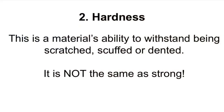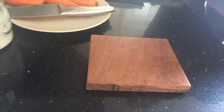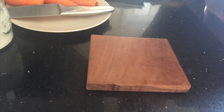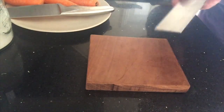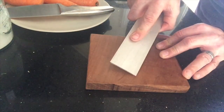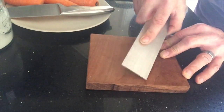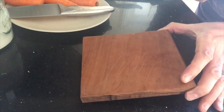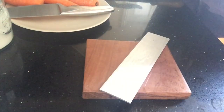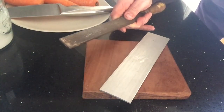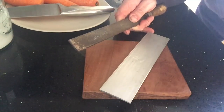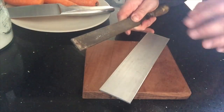Property number two is hardness — a material's ability to withstand being scratched, scuffed, or dented. It is not the same as strong. I've got a piece of hardwood — that feels hard enough, but not compared to a metal. I've got a piece of aluminium here; aluminium is a lot harder than the wood, which enables it to scratch the wood. Aluminium has a hardness of just under 3 on the Mohs scale. I've got a file here made from high carbon steel with a hardness of probably between 6 and 7, compared to just under 3 for aluminium.